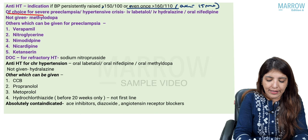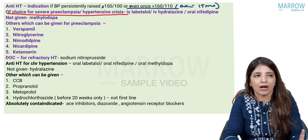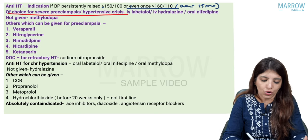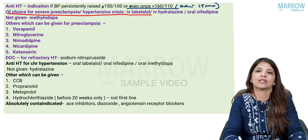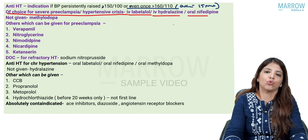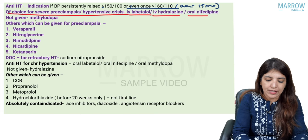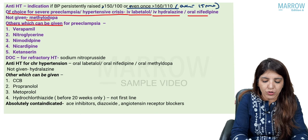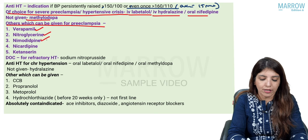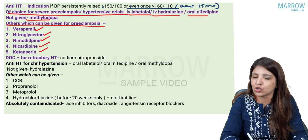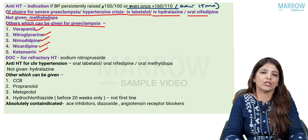The antihypertensive of choice for severe preeclampsia or hypertensive crisis — according to Williams new edition — there is no single drug of choice now. There are three first-line drugs: IV labetalol, IV hydralazine, and oral nifedipine. A drug which cannot be used in hypertensive crisis is methyldopa. Other drugs that can be given include verapamil, nitroglycerin, nimodipine, nicardipine, and ketanserin. The last resort drug for refractory hypertension is sodium nitroprusside, because it can lead to cyanide poisoning.